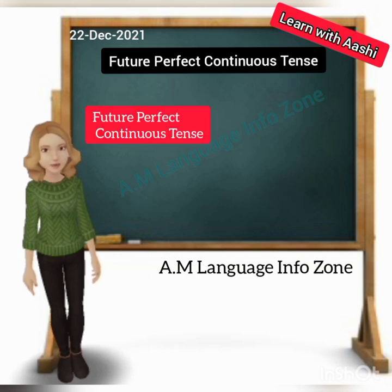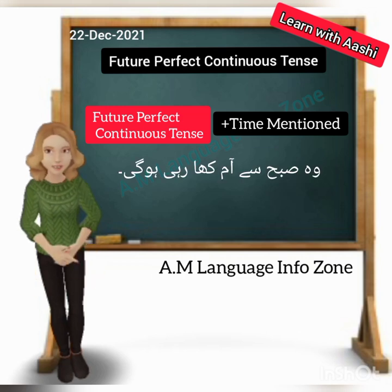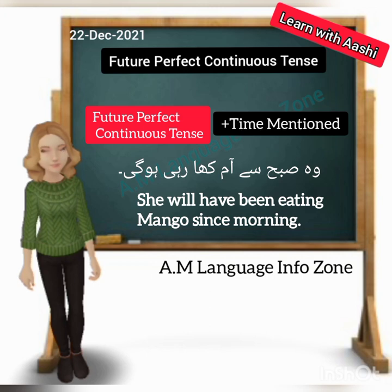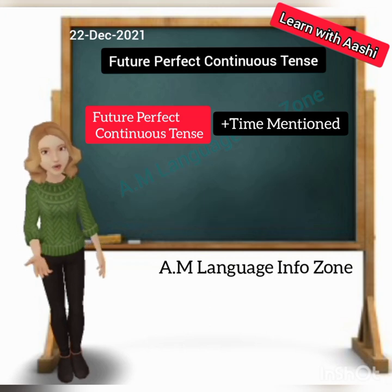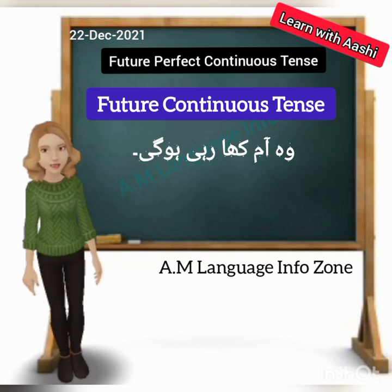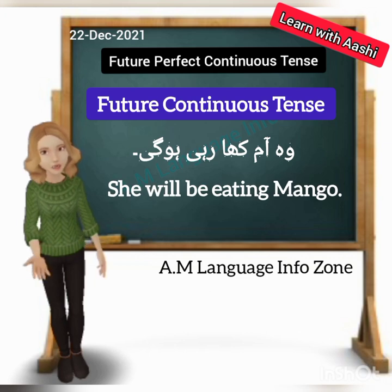For example: 'Wo subha se aam kha rahi hogi' — here they have mentioned the time 'subha se' (since morning): 'She will have been eating mango since morning.' If we talk about Future Continuous Tense, the sentence is: 'Wo aam kha rahi hogi' — 'She will be eating mango' — just eating mango, no time frame. So the difference is clear now.